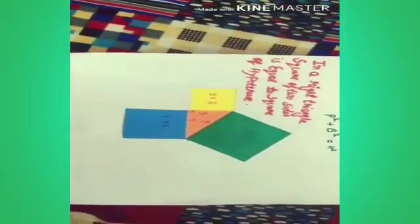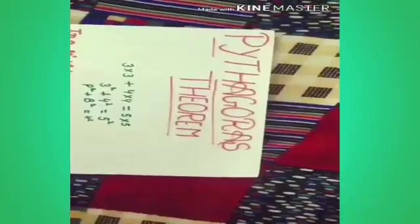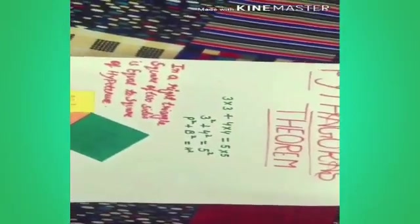9 plus 16 is equal to the square of 5, which is 25. Adding both sides, we get both sides are equal. In our right triangle, the sum of the squares of the two sides is equal to the square of the hypotenuse.